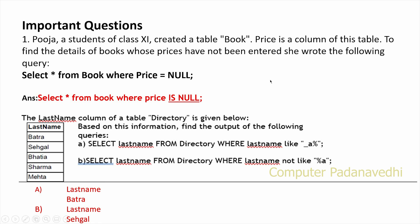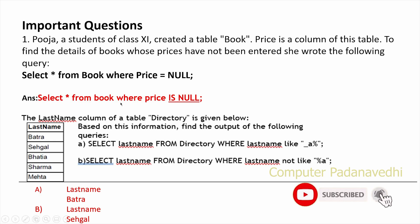To select items where the price is null: SELECT * FROM item WHERE price IS NULL.